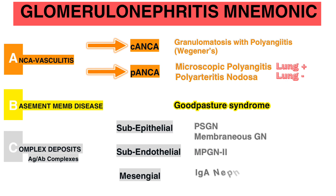Mesangial deposits are seen in IgA nephropathy. Interestingly, lupus nephritis can cause any kind of deposits.